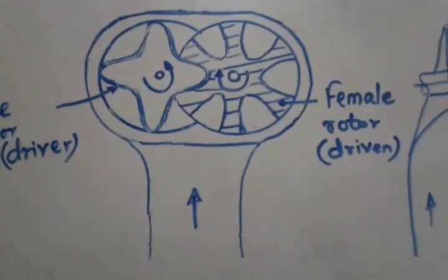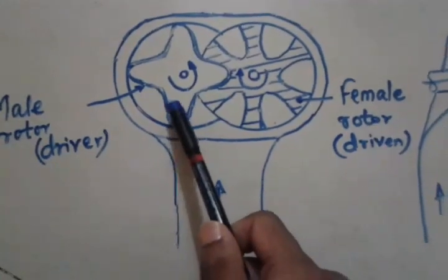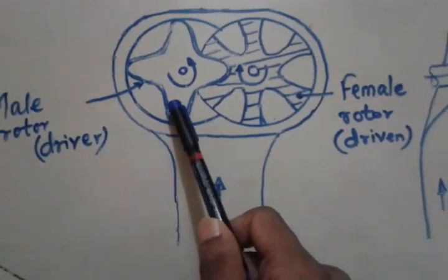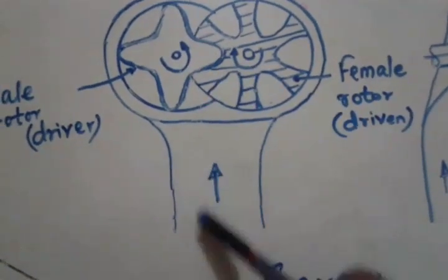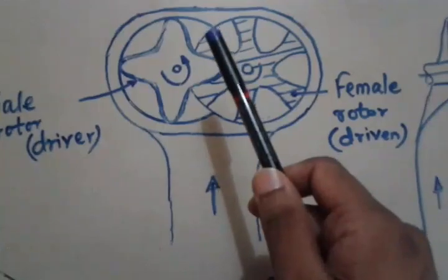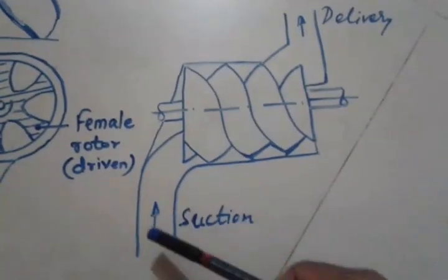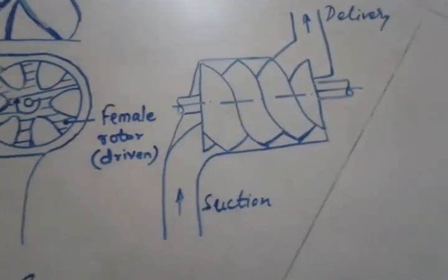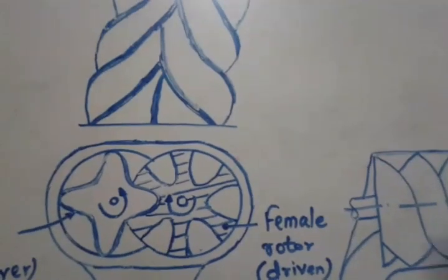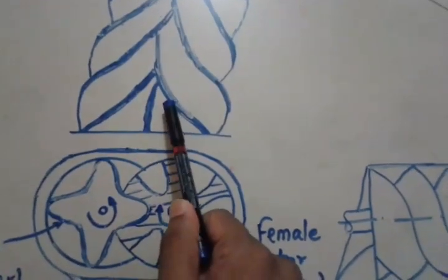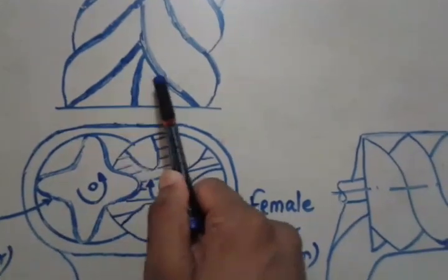Today's topic of discussion is screw compressor. In this view you can see a male rotor, which is the driving rotor, and the female rotor, which is the driven rotor. This is the suction end, and in this view you will not be able to see the discharge end. That's why another view is drawn which shows the suction as well as the delivery end. I have also made another view showing the interaction between the male and female rotor.